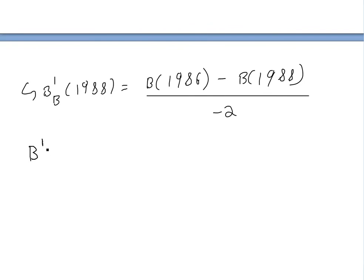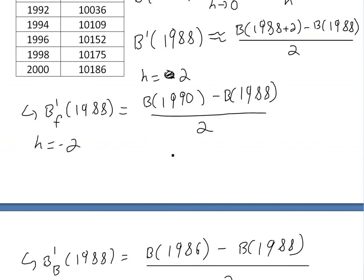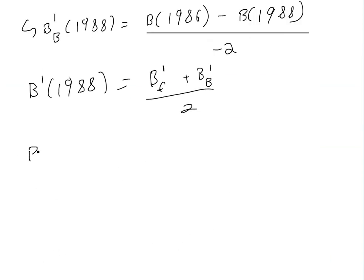We can say that the best approximation for B prime(1988) is the average of B_forward and B_backward, all divided by 2. So if we write out B_forward of 1988, scrolling up to the table, we calculate: (9962 minus 9884) divided by 2.